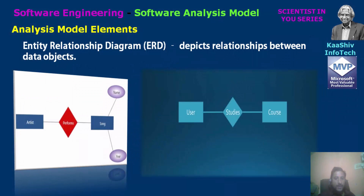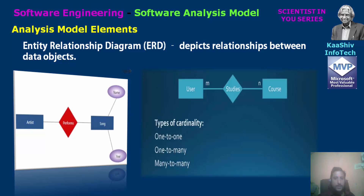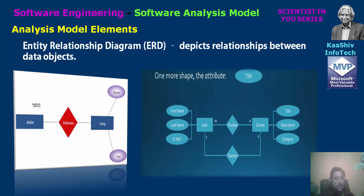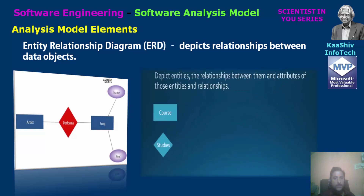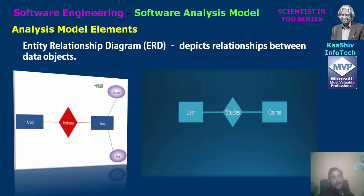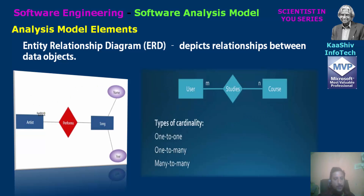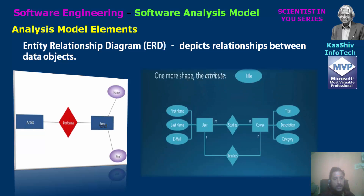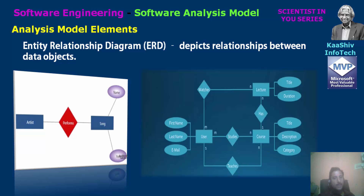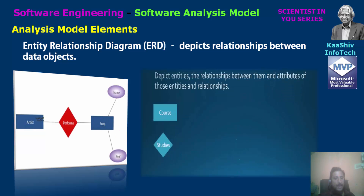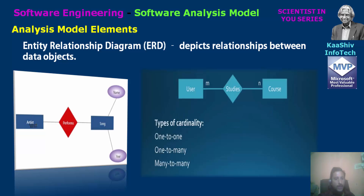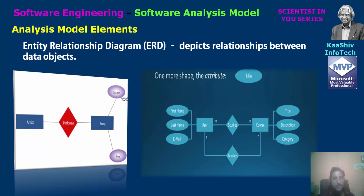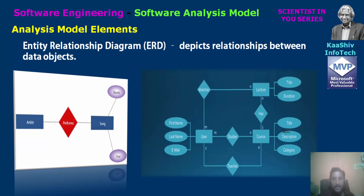The next one is the entity relationship diagram. The entity relationship diagram depicts the relationship between data objects. For example, one entity is a professor, and it depicts a student — teaching is the relationship. Another example: an artist is a person performing songs. The song has attributes like name and year. This is the entity relationship diagram — showing entities, relationships, and attributes.